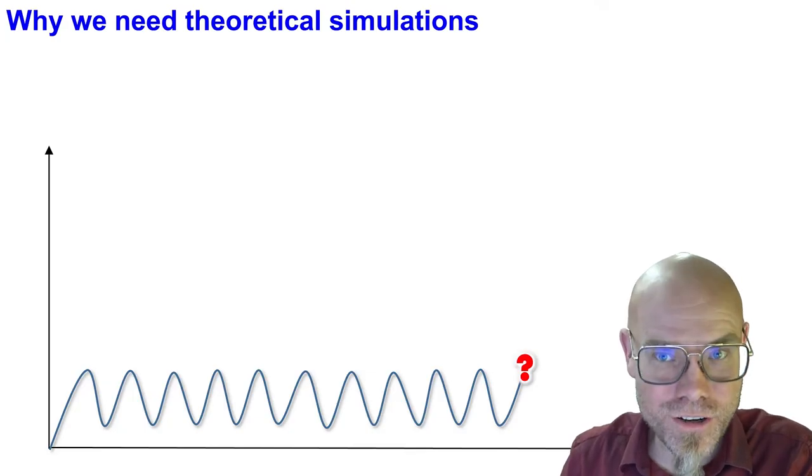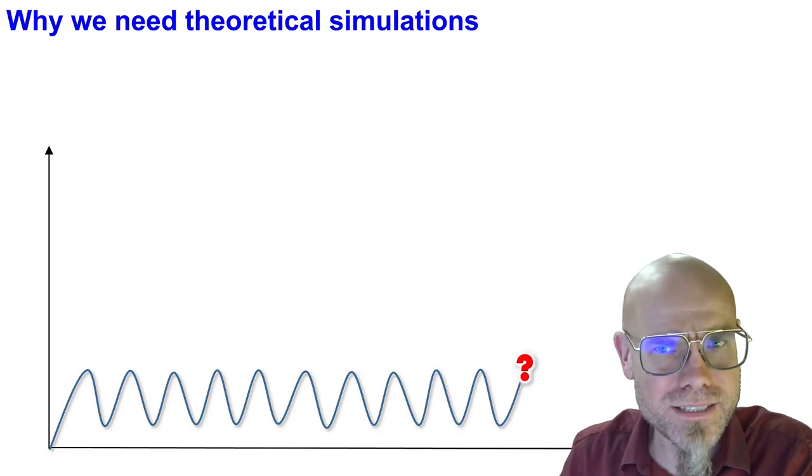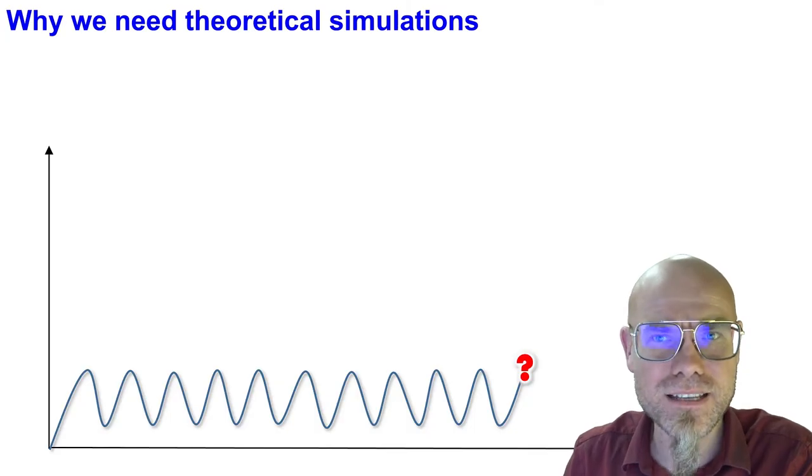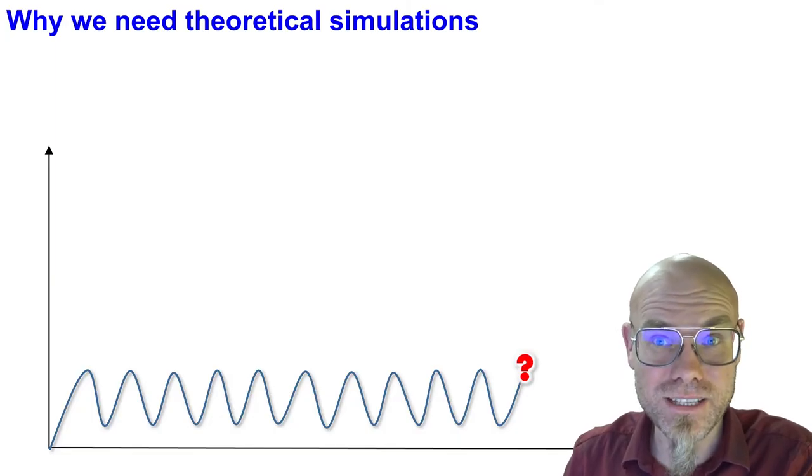So what machine learning does, if it's trained on empirical data, it basically locks us into the past. It condemns us to repeat the past forever. It puts us into a straitjacket.